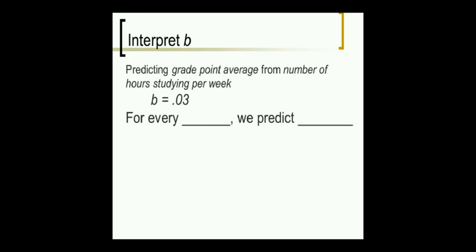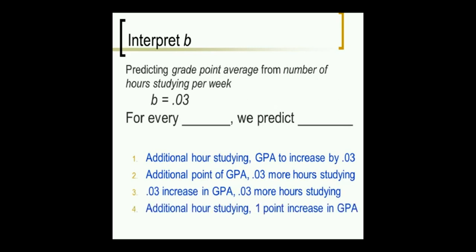I'm predicting grade point average from number of hours studying per week. B is 0.03. So, here are your four choices. Here comes the answer. For every additional hour studying, we predict GPA to increase by 0.03. Is the correct answer. You can kind of guess because the number makes sense. 0.03 increase is probably more reasonable than 0.03 increase in hours studying.